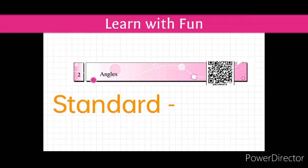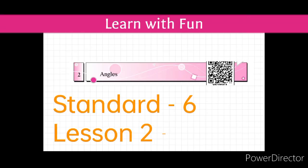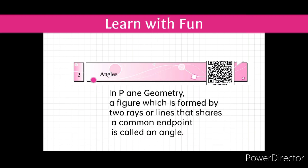Hello students, today we are going to learn lesson number 2 of standard 6. The name of the lesson is Angles. In this lesson we are going to study various types of angles. Before that, let us learn what is meant by angle. Angle means in plane geometry, a figure which is formed by two rays or lines that share a common end point is called an angle.